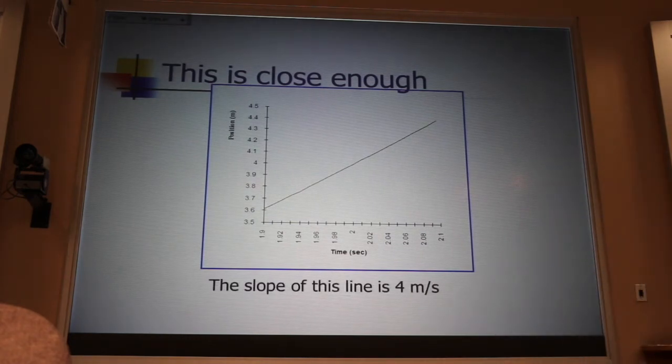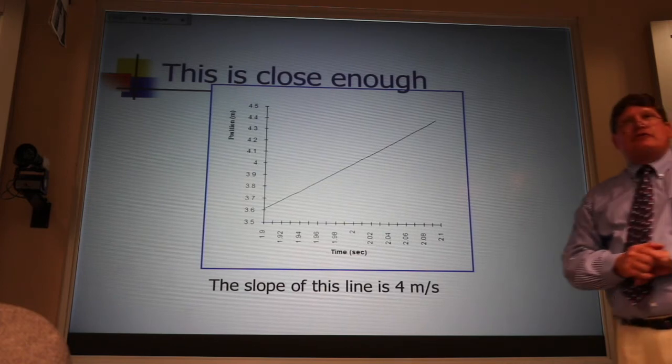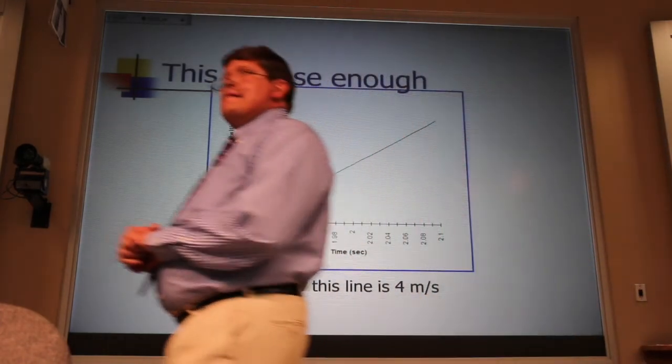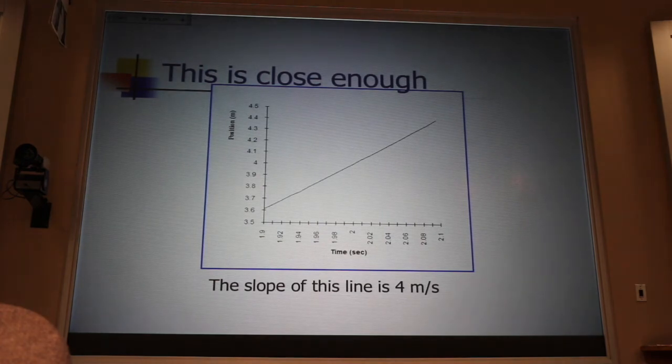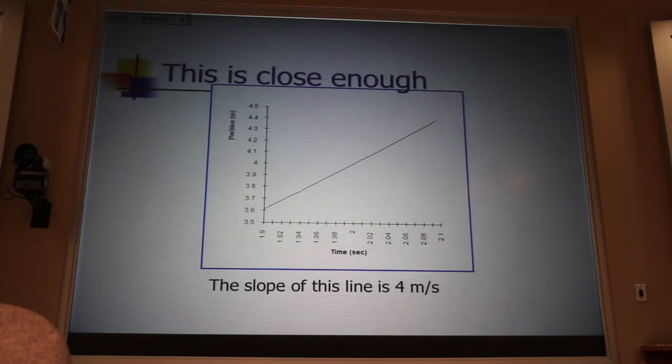The slope of that graph happens to be 4 meters per second. Now, I ask you, is this truck going to go 4 meters in the next second? No. So, what interpretation can I give this slope? What does 4 meters per second tell me about this truck?